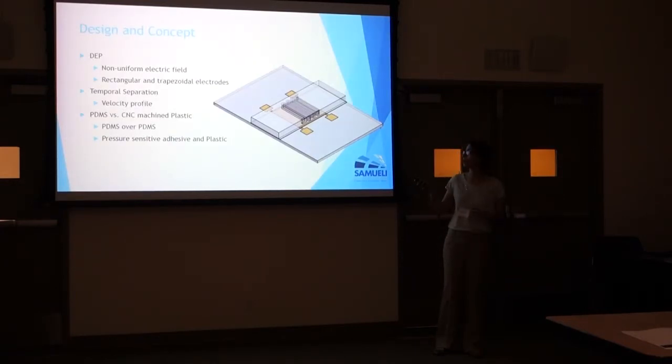We've discussed using two different types of shapes. One is a rectangular shape of arrays of electrodes and the other is trapezoidal. We want to determine which one would provide a better electric field for the DEP.